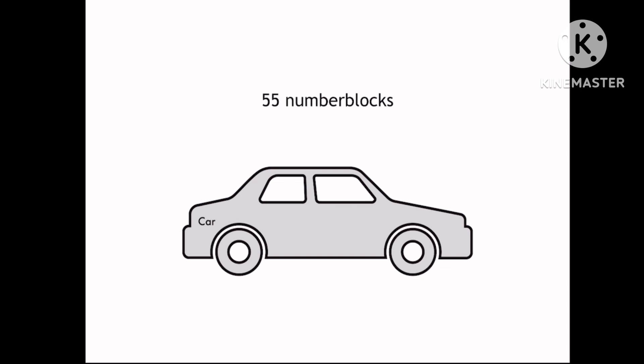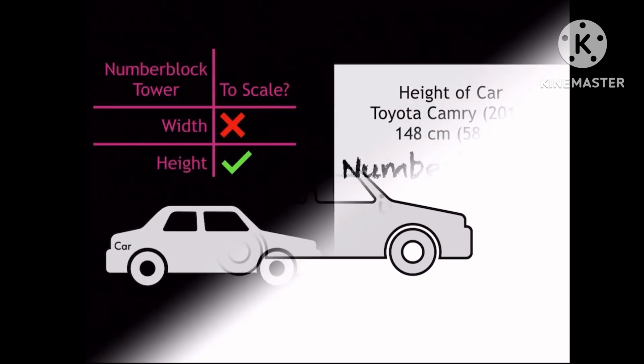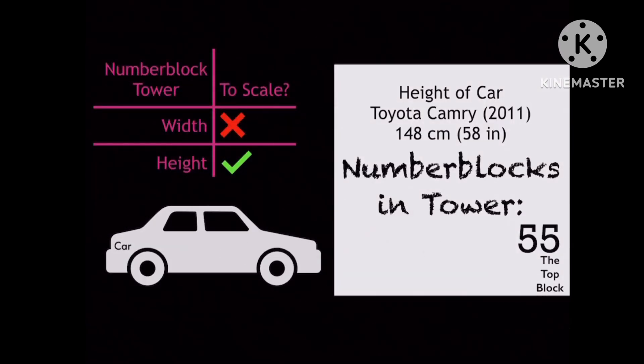The height of this car is around 55 number blocks. They're getting hard to balance, so let's go digital. The number block tower's width is not to scale, but the height is to scale, and the top block is determined by the last digit.